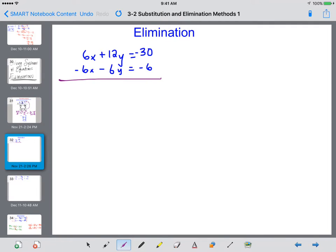If we were to add the equations together, 6x plus a negative 6x, that means this time the x is eliminated. 12y plus a negative 6y, well that's like 12 minus 6, so that's going to give me a positive 6y. Negative 30 plus negative 6, that's negative 36.